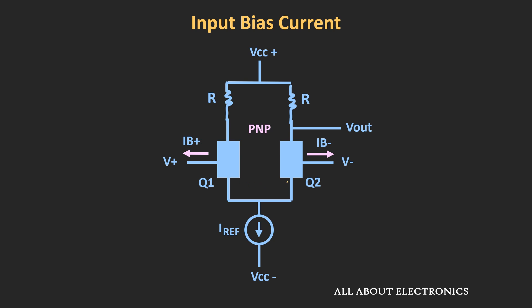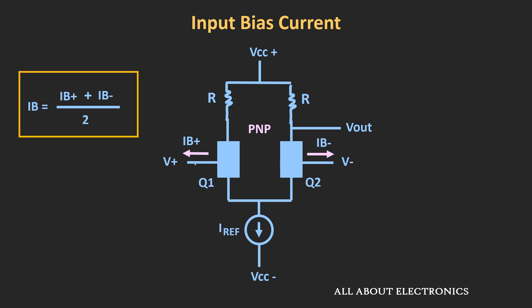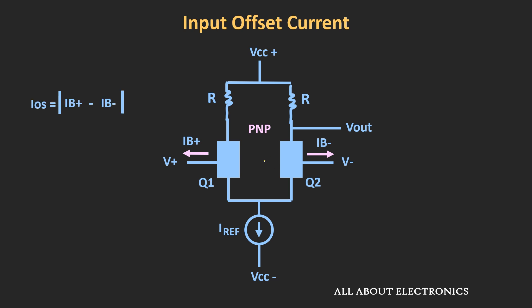Usually in data sheets, the input bias current is defined as the average value of these two currents IB+ and IB-. That is the definition of the input bias current. Ideally, these two biasing currents should be identical. But because of some mismatch between the two transistors, there will be some difference between the two biasing currents. The difference between the two input bias currents is usually defined as the input offset current in the data sheets. So the input offset current is the difference between the two biasing currents.